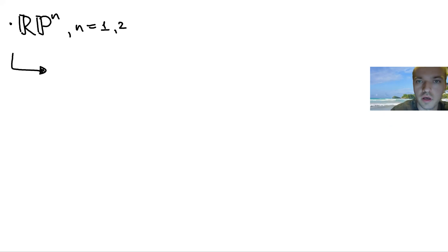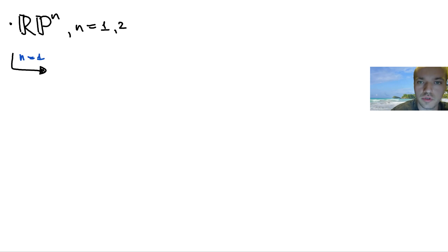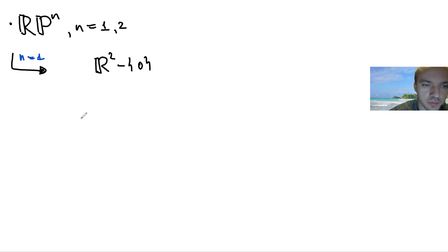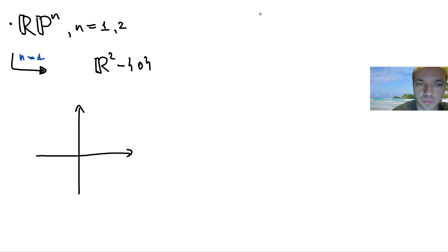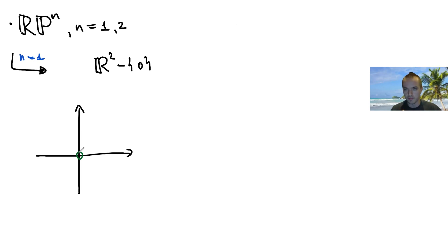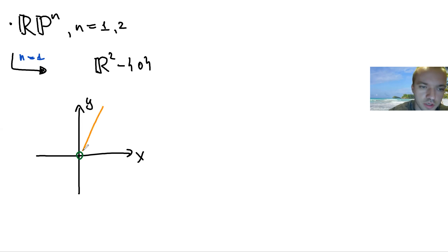To build RP¹, I'm going to start by taking R² without the origin — so I have this plane and I subtract the zero point. Then, with this plane without the origin, I can consider different lines, which I'll indicate in orange — this is my line L₁ and this is my L₂.